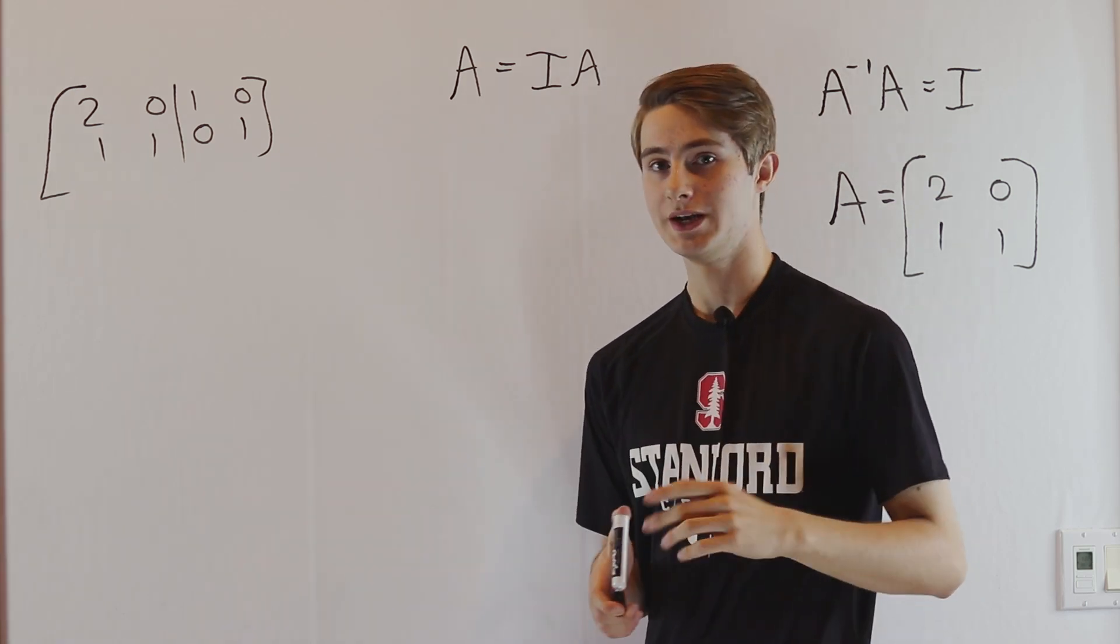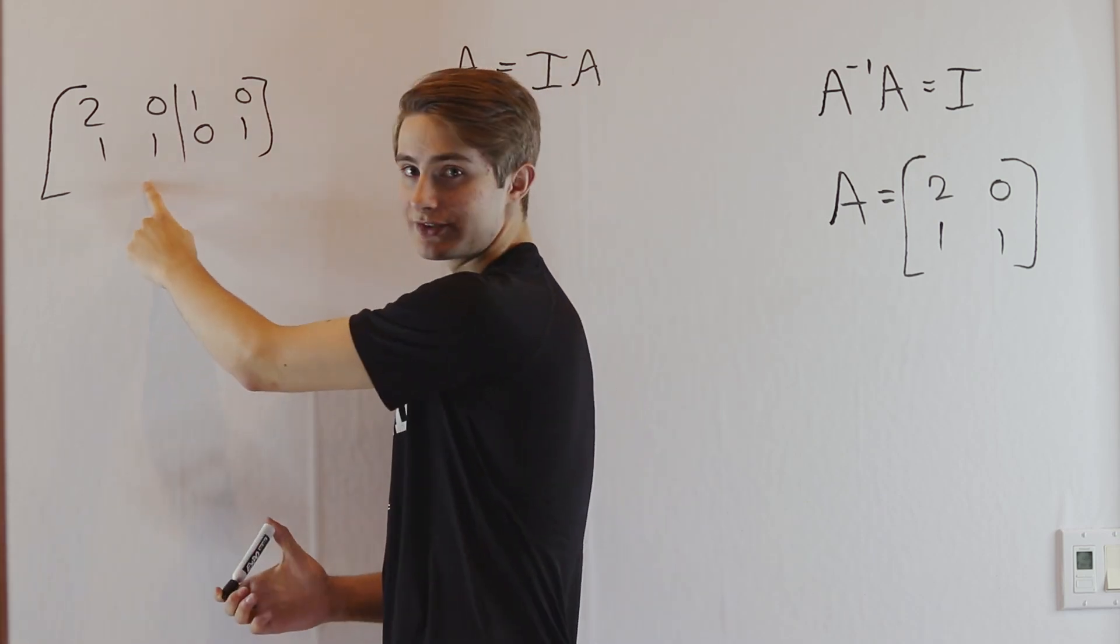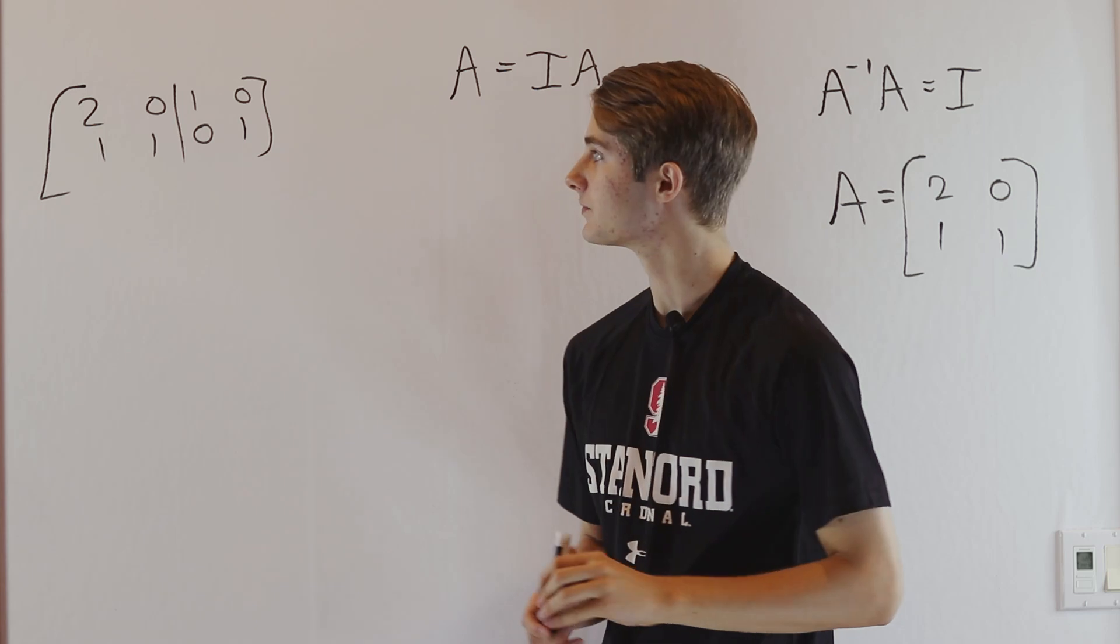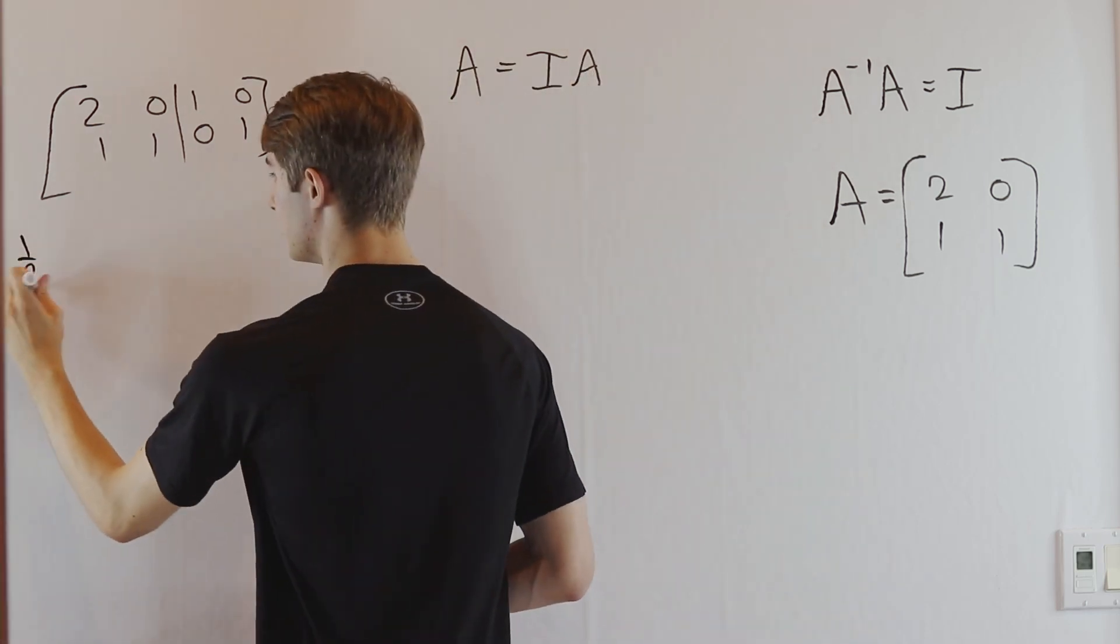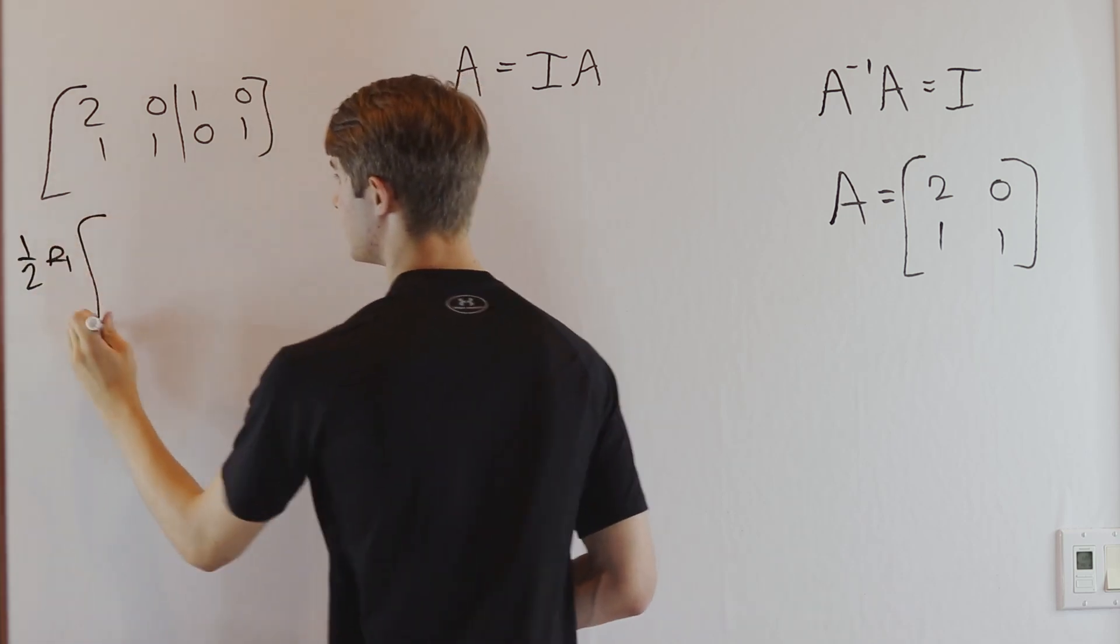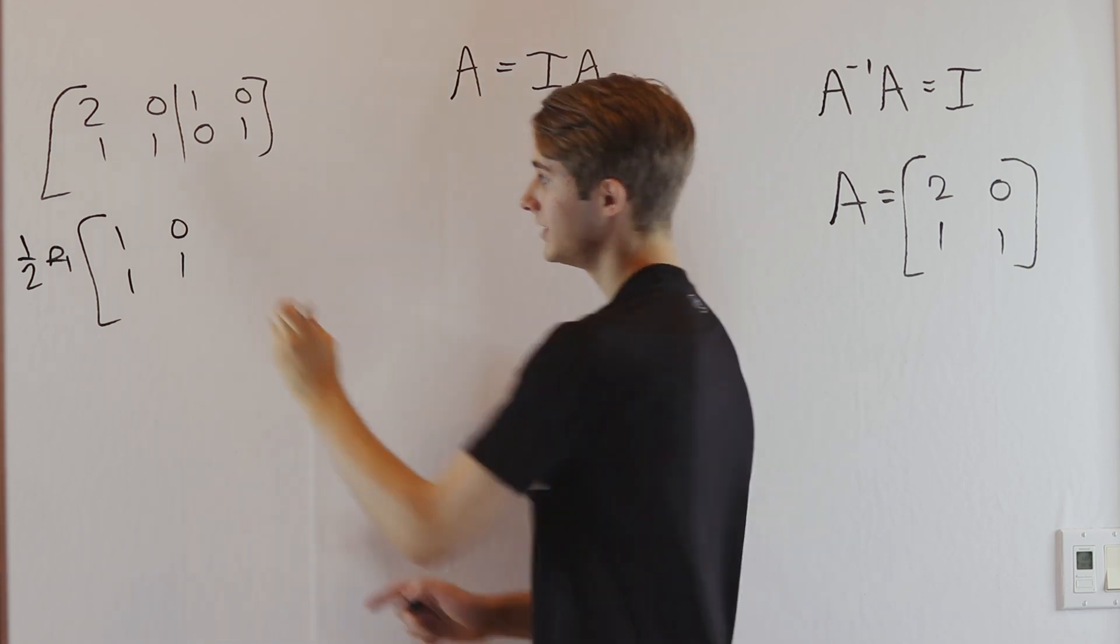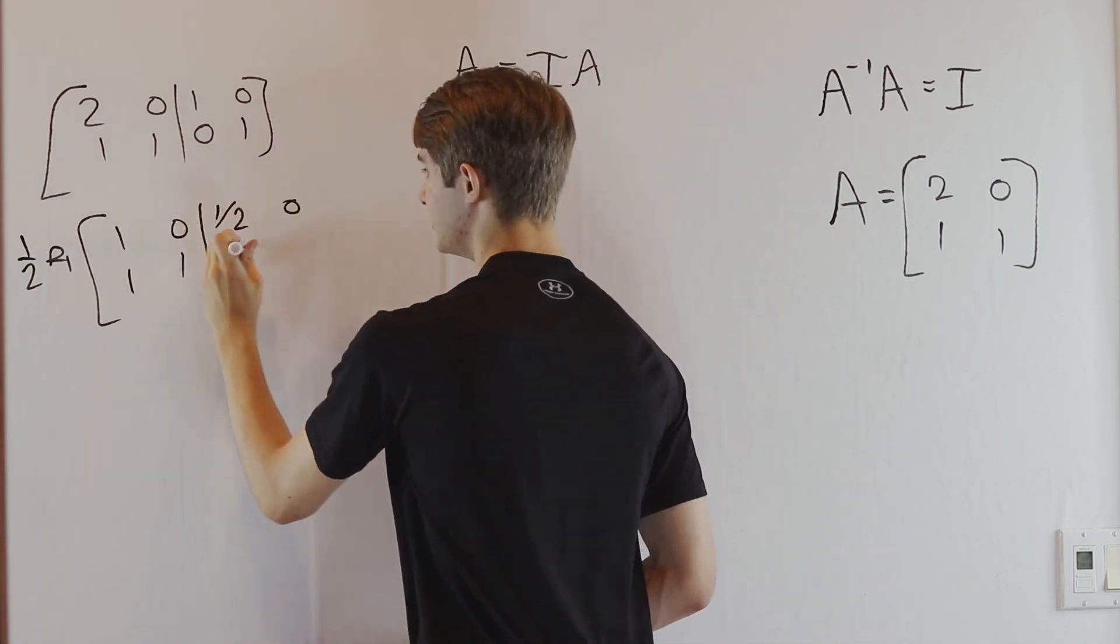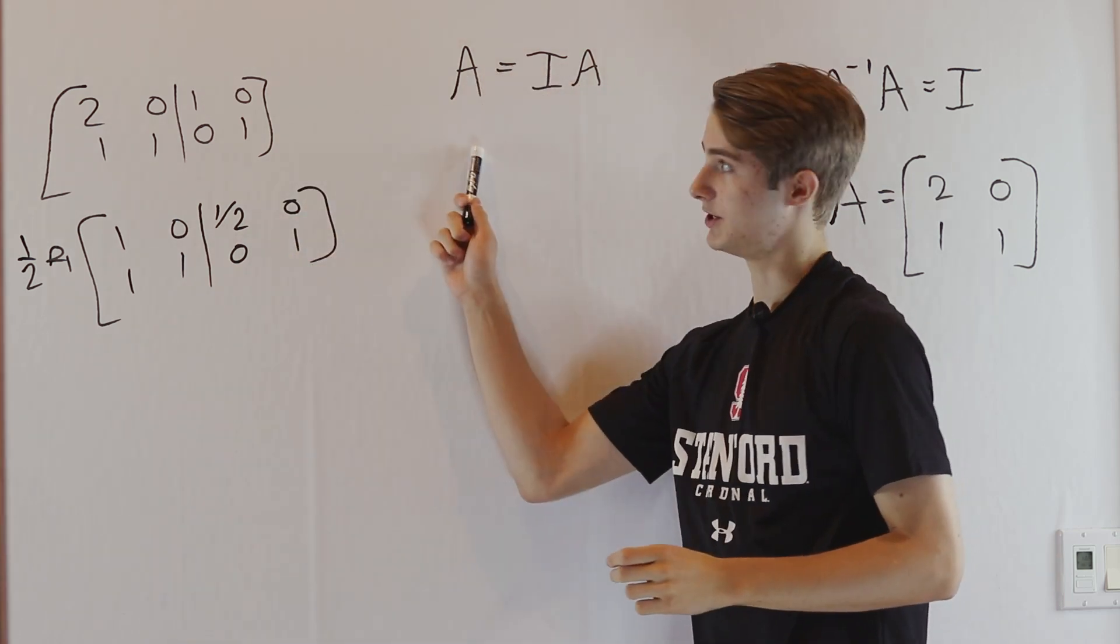What we're going to do now is reduce the left side down to the identity using row reduction. Let's multiply the top row by 1/2. We do (1/2)R₁, giving us [1, 0; 1, 1] on the left side. We do the same thing on the right side, getting [1/2, 0; 0, 1]. We'll express this in our equation.